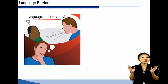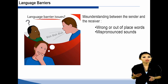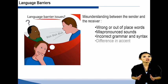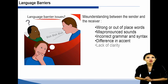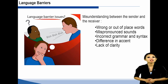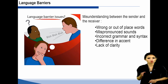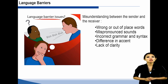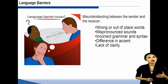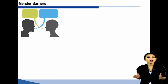Language barriers: Language that describes what we want to say in our own terms may present barriers to others who are not familiar with our expressions, buzzwords, and jargon. In a global marketplace, the greatest compliment we can pay another person is to talk in their language. Incapability or failure to communicate in a language known to both the sender and the receiver is the most crucial barrier to effective communication. Wrong or out-of-place words, mispronounced sounds, incorrect grammar and syntax, difference in accent, and lack of clarity could all lead to misunderstanding between sender and receiver.